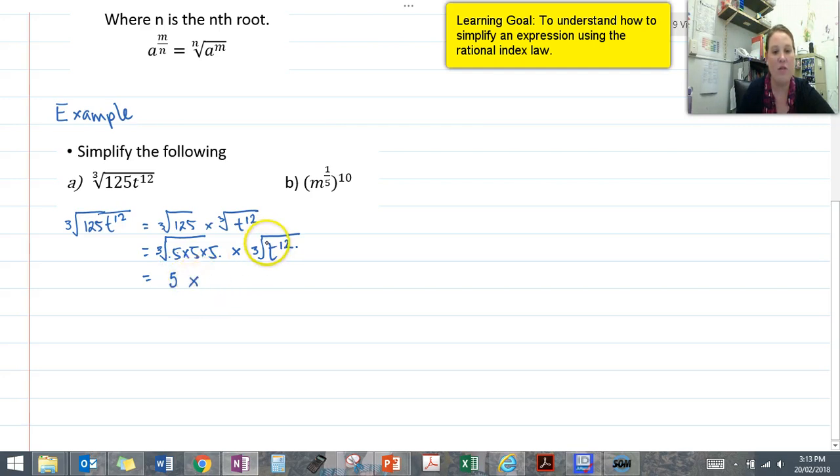And then we can simplify our t to the power of 12 divided by 3 using our rule. So our n value is 3, our m value is 12, and our a is t.